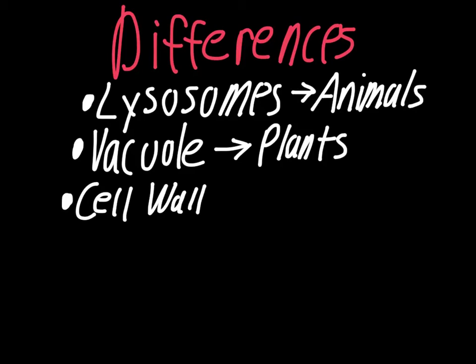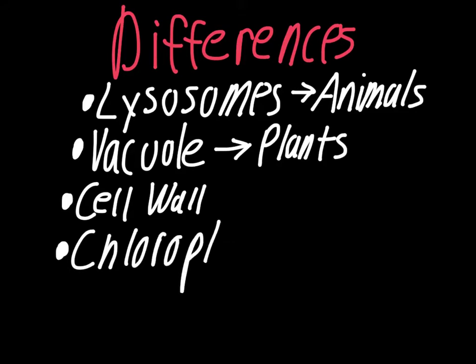Another important difference is the cell wall, obviously limited to plant cells. Things like fungi will have a cell wall, but they're kind of somewhere in between — we'll talk about them in more detail at the end of the year. And obviously, a big one is the chloroplast, found just in plants.